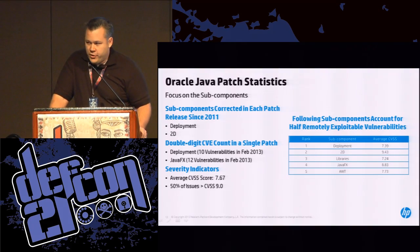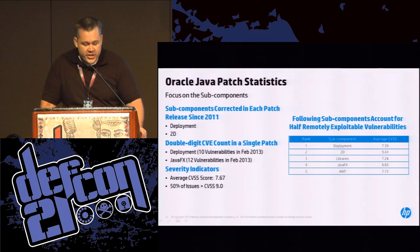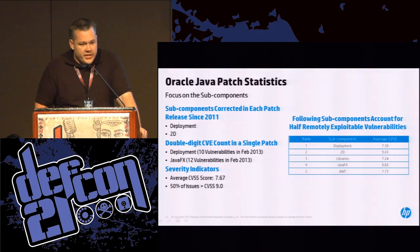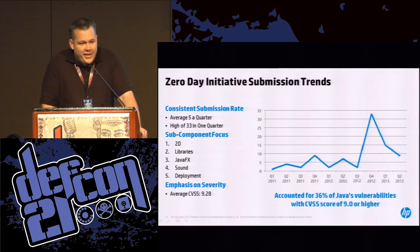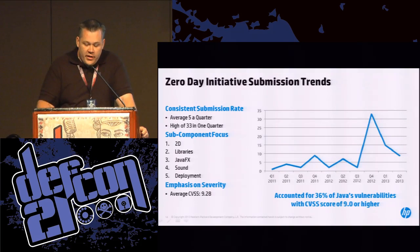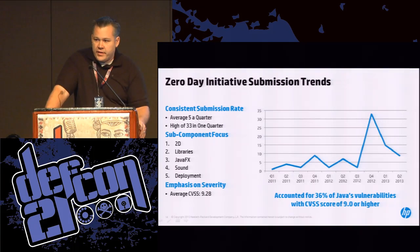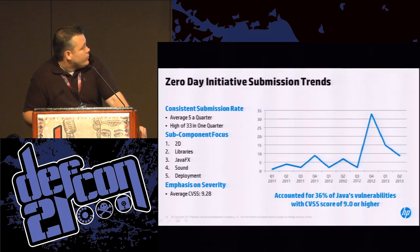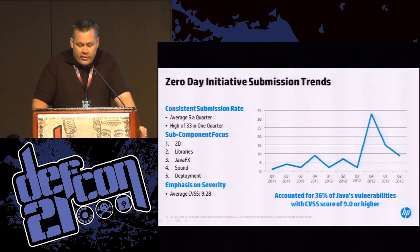At one point there were two components with double-digit CVE counts in a single patch: deployment had 10 vulnerabilities patched in February 2013 and JavaFX had 12 vulnerabilities in February 2013. If we tie that with the Zero Day Initiative submissions, we see that on average ZDI is receiving about five Java zero days every quarter, with a high of 33 in one quarter thanks to Ben Murphy and Vitaly — the highest count submitted to our program in one quarter.